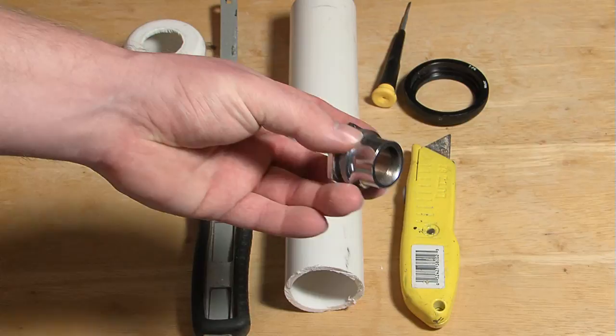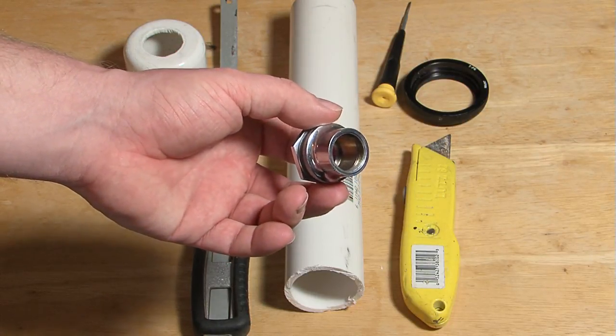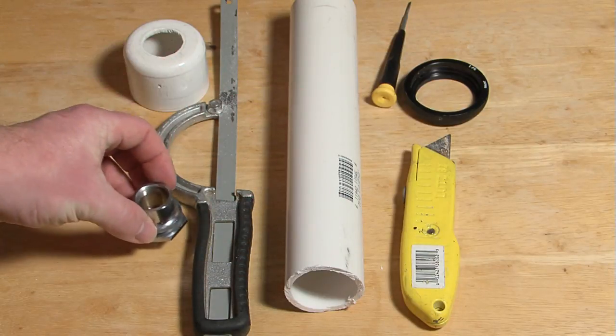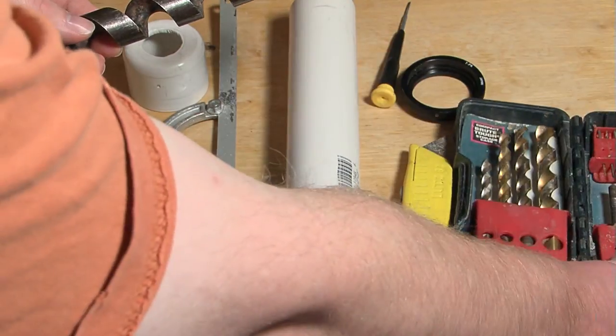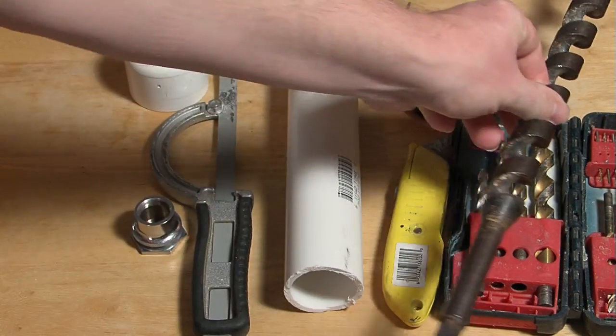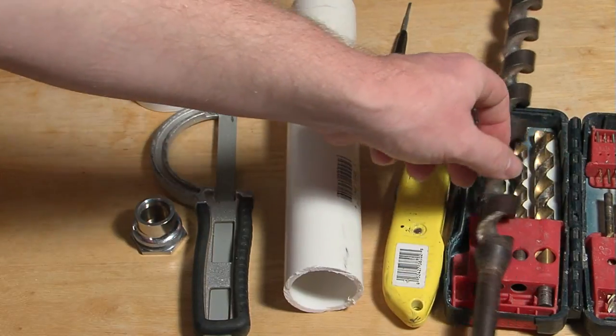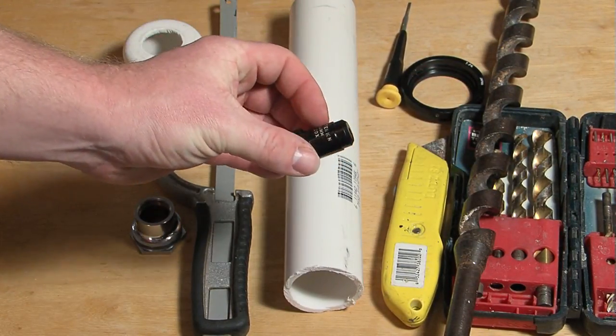You will also need a microscope optical mount. This allows for the quick and easy removal of the actual microscope opticals. A set of drill bits and possibly an auger. And finally, a microscope optical.